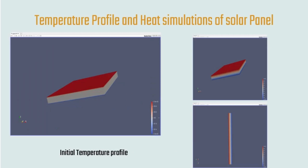We obtained a linear temperature profile along the thickness of the solar panel. The left figure represents the temperature profile for the initial condition when radiation just started falling on the surface, and the right one represents the steady-state condition when the temperature across the thickness became time-independent.